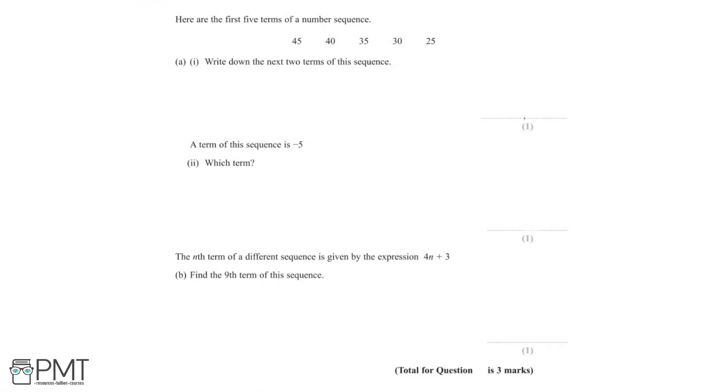In this question, we're given the first five terms of a number sequence: 45, 40, 35, 30, and 25. And in part A(i), we need to write down the next two terms of the sequence.